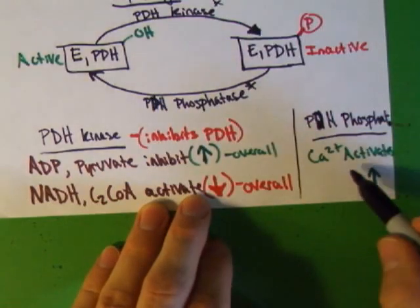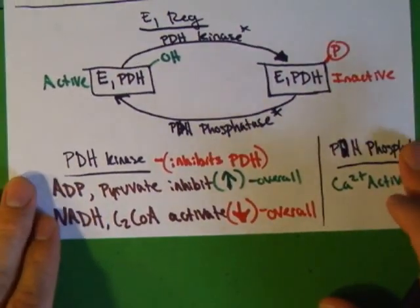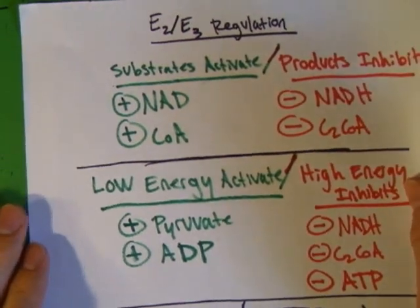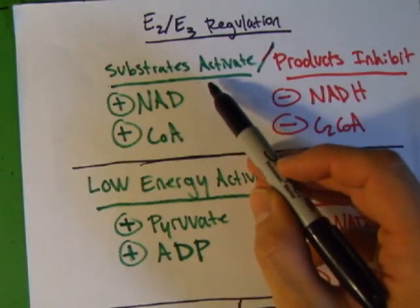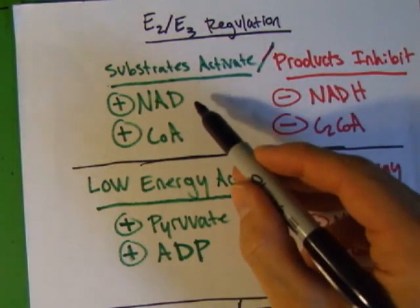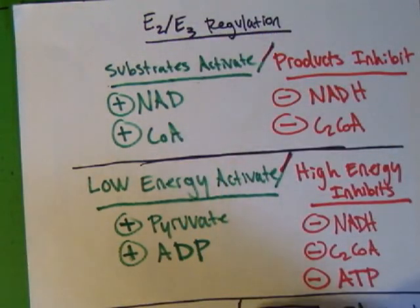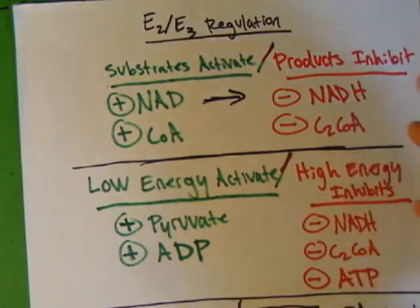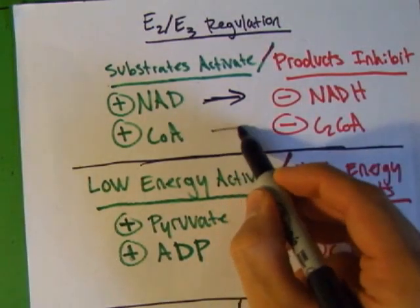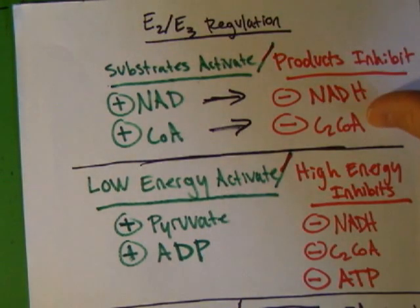PDH phosphatase is nice and easy. This reaction is stimulated by calcium. So calcium activates this into its active form. The rest of the regulation is pretty simple. E2 and E3 are grouped together. It's mass activation. So if you have substrates for the reaction, they're going to activate it. If you have NAD, you want to keep processing that. If you have CoA, you want to keep processing that. So that's going to stimulate E2 and E3. Once you've done that, once you've used up your NAD and turned it into NADH, the products are going to inhibit. So if you have enough NADH or if you have enough acetyl-CoA, that's going to stop E2 and E3 from happening, from catalyzing those reactions.